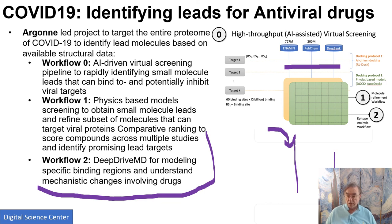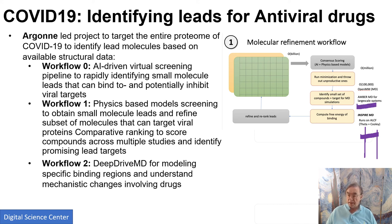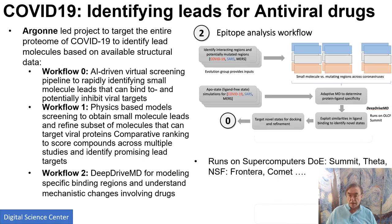Workflow one is finding particular molecules, running on the Argonne Leadership Computing Facility where the machines are named Theta and Cooley. Theta is quite well known — it's a big Intel Knights Landing system. It uses the well-known molecular dynamics code AMBER. Workflow two involves understanding the detailed interaction between drugs and molecules, and this is running on many supercomputers.